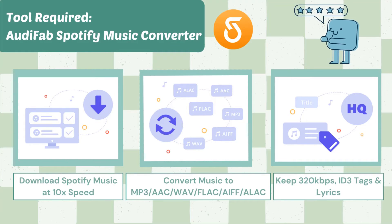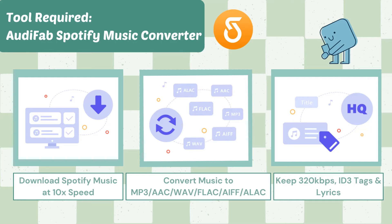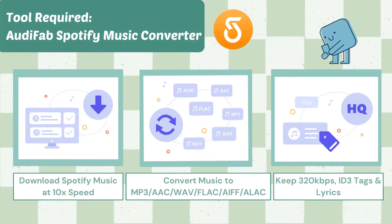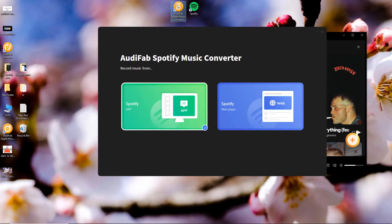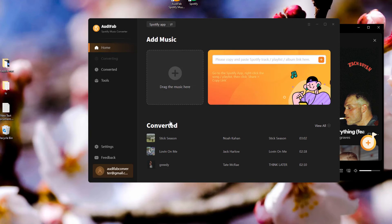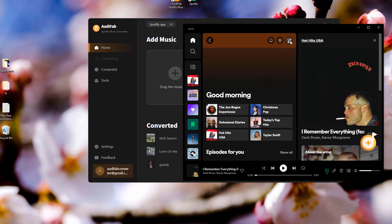Here are the steps on how to use AudiFab. Download AudiFab from the link in the description below. Open AudiFab and choose Spotify App Mode — the Spotify app will pop up. Then drag and drop the playlist from Spotify into AudiFab.